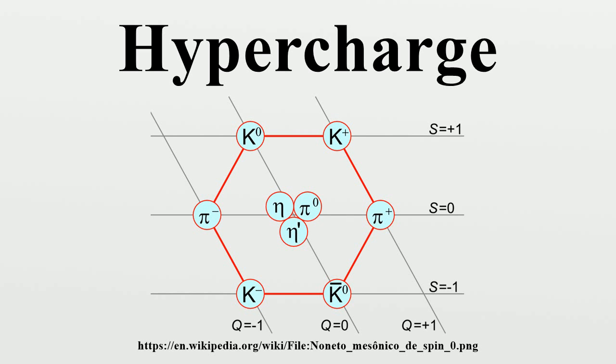Hypercharge was a concept developed in the 1960s to organize groups of particles in the particle zoo, and to develop ad hoc conservation laws based on their observed transformations. With the advent of the quark model, it is now obvious that hypercharge Y is the following combination of the numbers of up, down, and strange quarks.